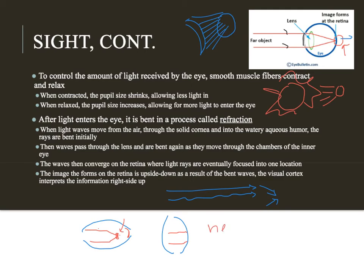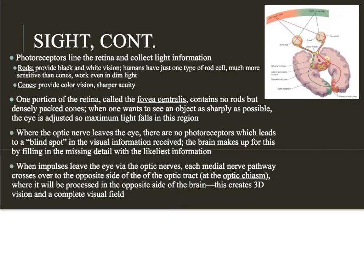Those conditions are called nearsighted or farsighted depending on which way the eye is misshapen. If the image is focused perfectly on the retina, we have two kinds of photoreceptors collecting that light information. The first type is called a rod, which allows vision for black and white, shading, shadow, and brightness. Humans have one type of rod cell, very similar from person to person, and they're very sensitive so they work well in all kinds of light.